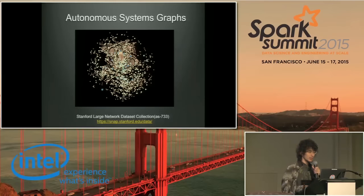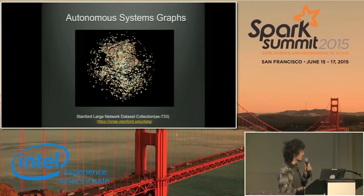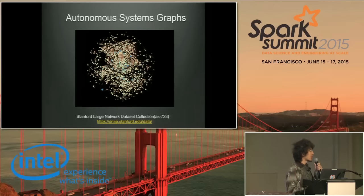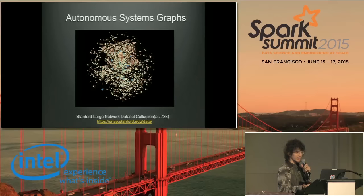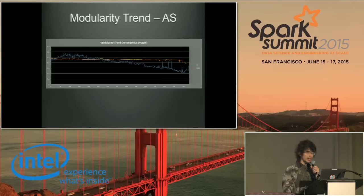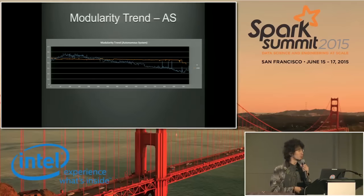Let's see the experiment results. The first result is on the autonomous system graph from the Stanford large network dataset collection. It's called AS733, which is combined from 733 files. We use it to simulate file streams with a small dataset and see the result of the streaming graph. We can see the two modularity curves change over time. The UMG algorithm is very smooth and steady, while the JV algorithm vibrates seriously and falls quickly. The UMG algorithm performs well on the small dataset.